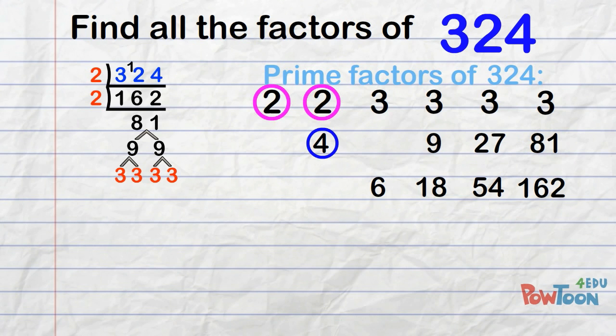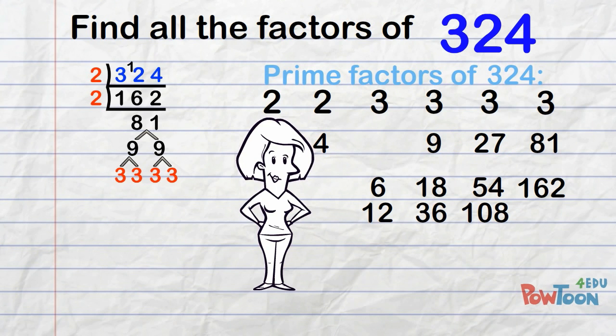Then use the 4, which comes from 2 times 2. 4 times 3 is 12, 4 times 9 is 36, 4 times 27 is 108. And that's all the calculations done.